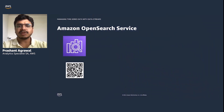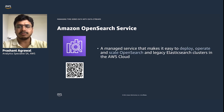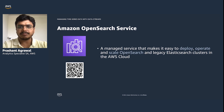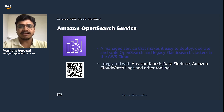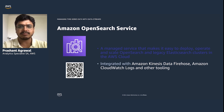Before getting into data streams, let me explain Amazon OpenSearch Service. Amazon OpenSearch Service is a fully managed service that makes it easy to deploy, operate, and scale OpenSearch along with legacy Elasticsearch clusters in the AWS cloud. It also has tight integration with other AWS services such as Amazon Kinesis Data Firehose, AWS Lambda, CloudWatch, and so on.